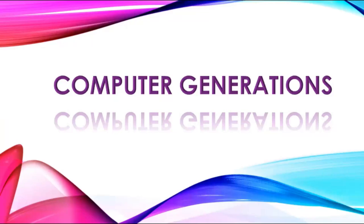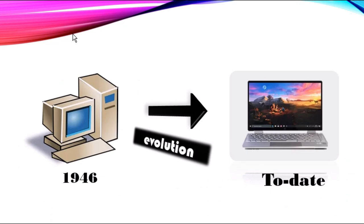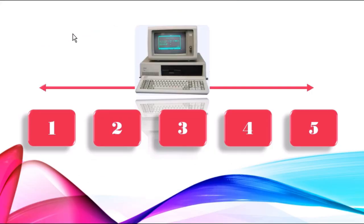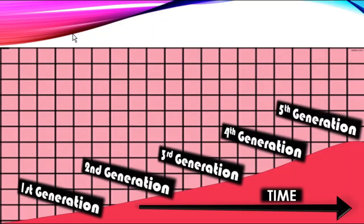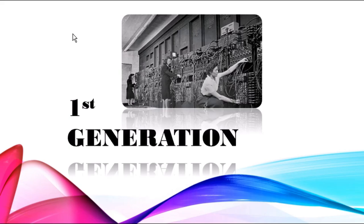In this video we are going to discuss an interesting topic: the computer generations. This is basically the evolution or development of computer systems, normally discussed as its succession through different generations. Computer generations started back in 1946 and have been evolving ever since. There are five generations in number, from the first generation through to the fifth. We will now discuss these generations one by one.